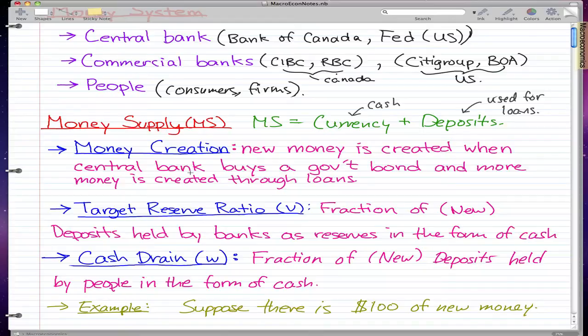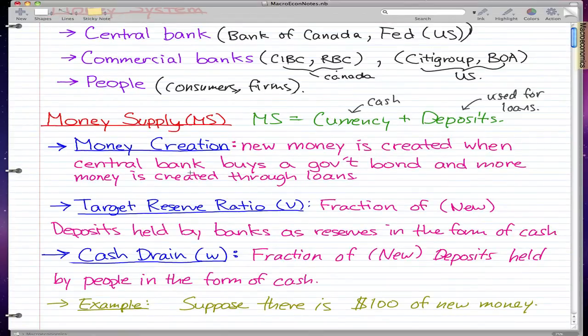And the second definition is target reserve ratio. This is a fraction of deposits held by banks as reserves in the form of cash. The banks will always have cash in their bank because if you put your money in the bank and you come back and ask for it back, then they must have the paper to give back to you.